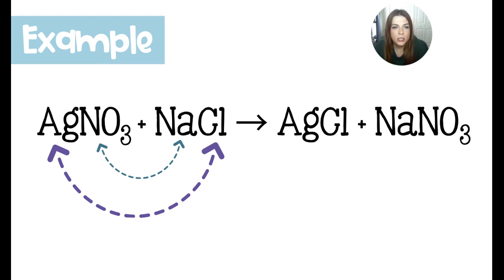So here's an example of what that would look like. We have silver nitrate and sodium chloride. Silver is going to pair up with chlorine and the sodium is going to pair up with the nitrate. They're just going to swap partners.